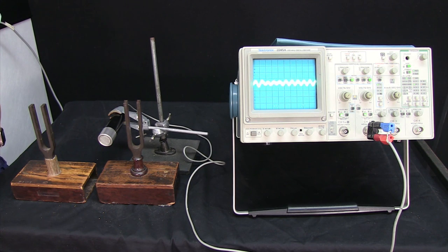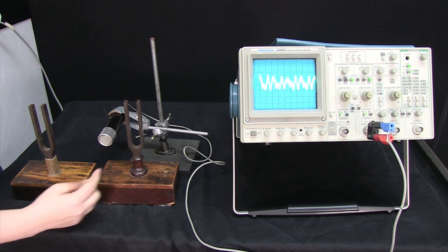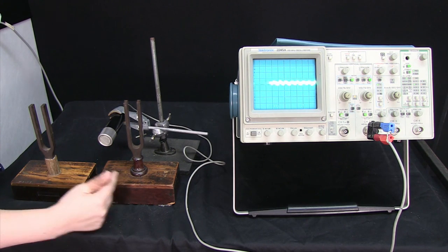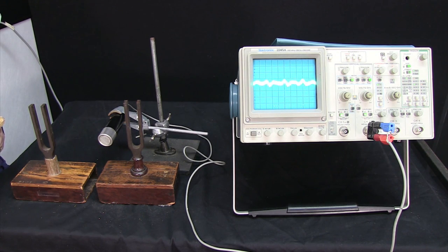Now I want you to make a prediction about what signal you'll see when I hit both these tuning forks together. Remember, this one's 703 hertz, this one's 704 hertz. Write down your prediction now.